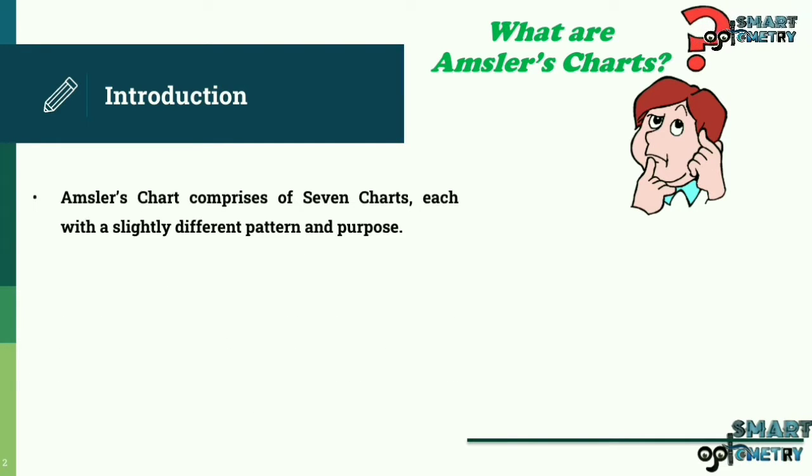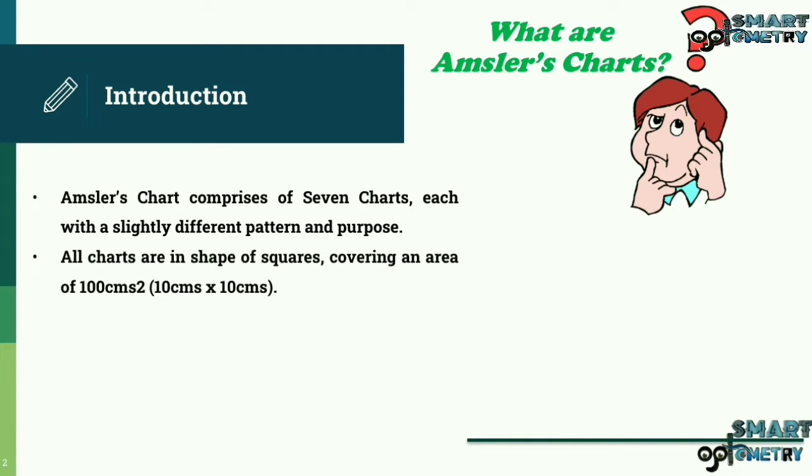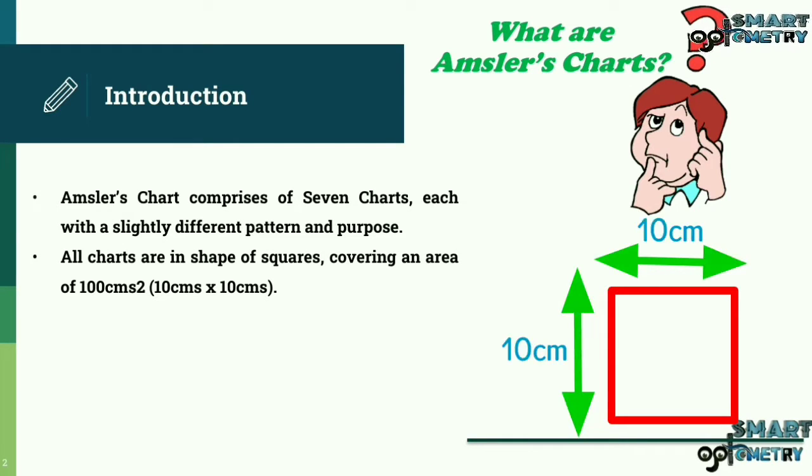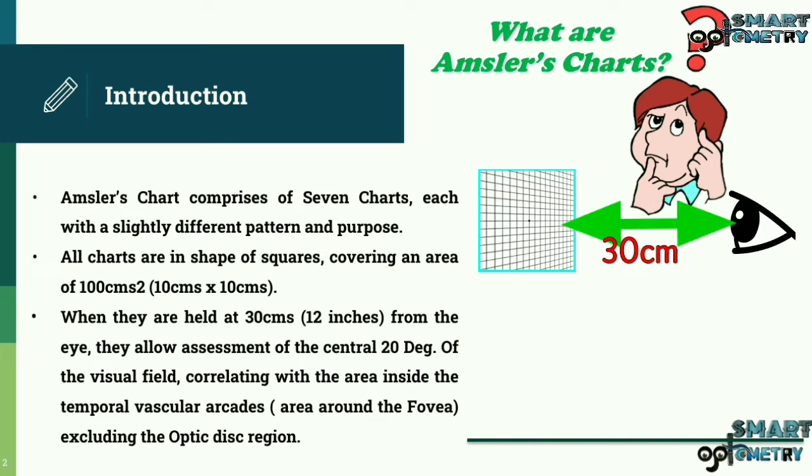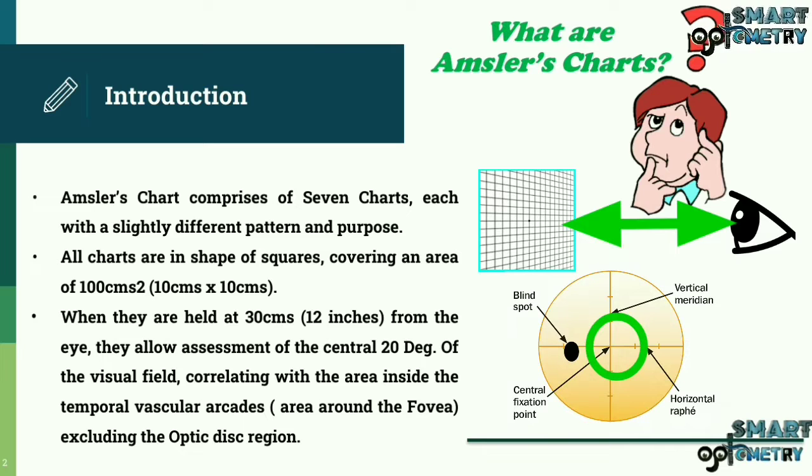Amsler's Chart comprises of 7 charts, each with a slightly different pattern and purpose. All charts are in shape of squares covering an area of 100 cm square, that is 10 cm by 10 cm. When they are held at 30 cm, 12 inches from the eye, they allow assessment of the central 20 degrees of the visual field, correlating with the area inside the temporal vascular arcades, the area around the fovea, excluding the optic disc region.